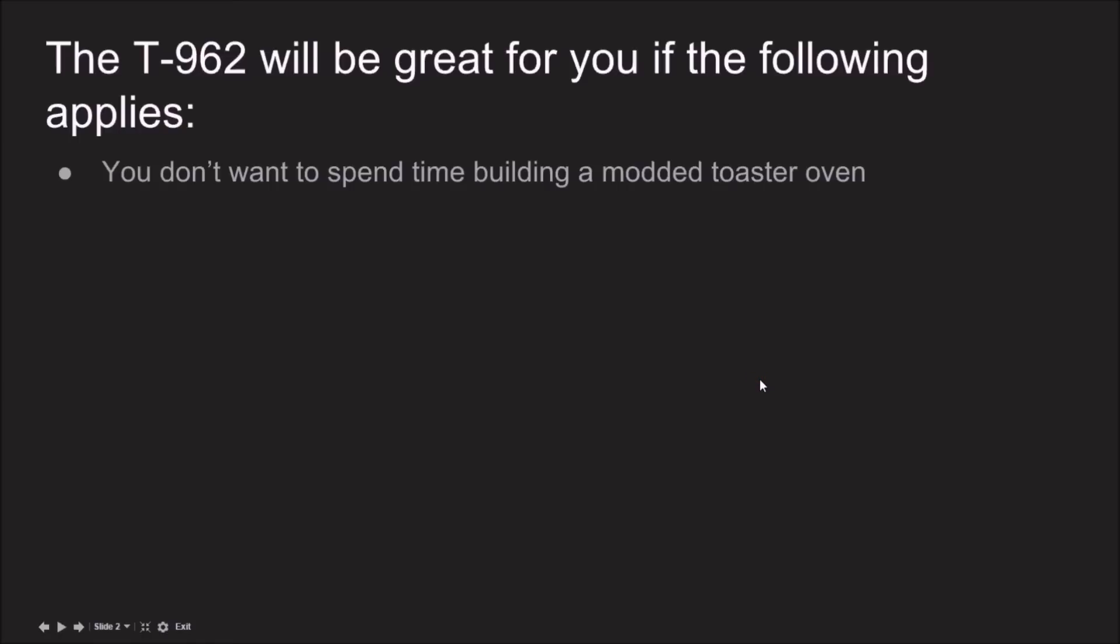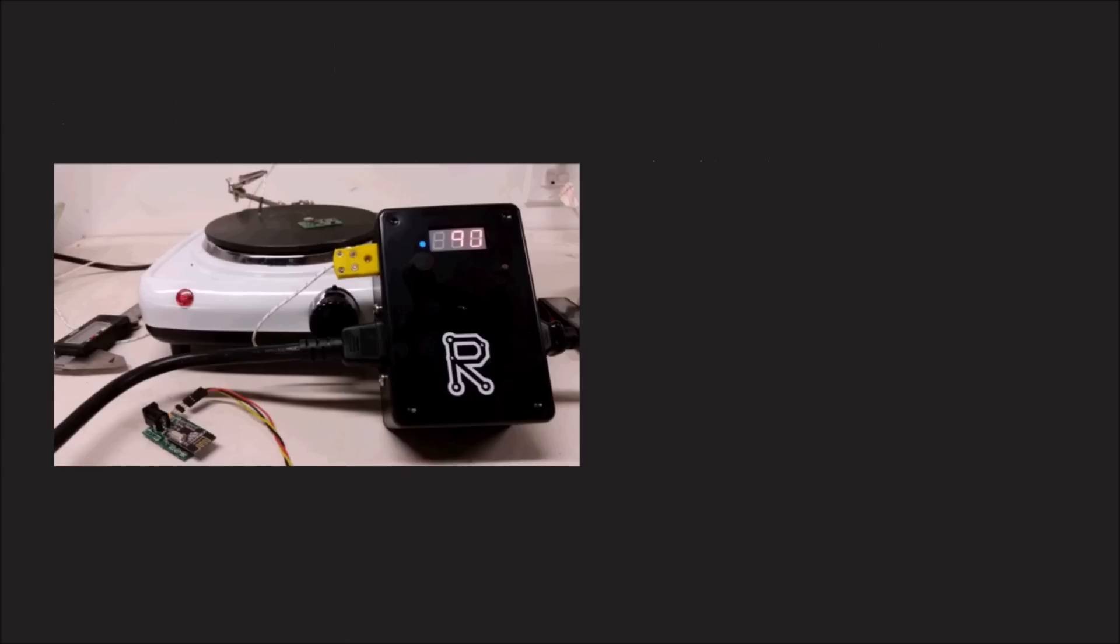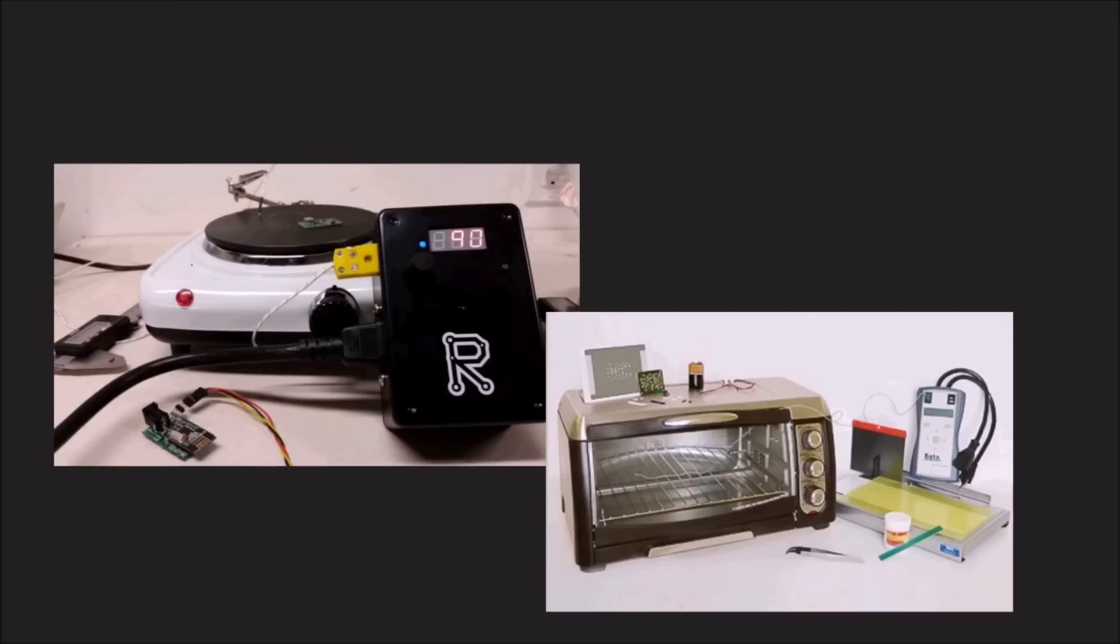Number one is that you value your time and you don't want to spend all your time modifying a toaster oven. An alternative to using the T962 is buying a reflow controller, in which many cases will take a while to install and set up. And number two is that you're not really a big fan of the packaging method for external reflow controllers.